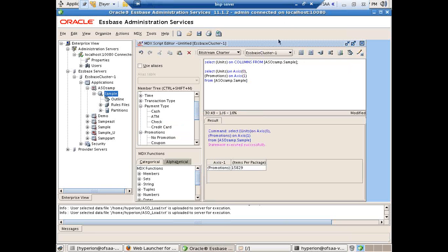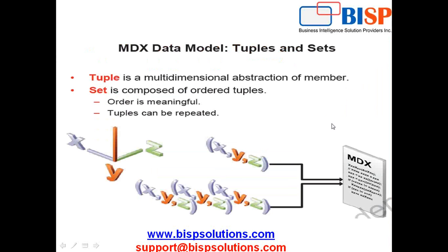Now let's look at two very important concepts in MDX: tuples and sets. A tuple is a multi-dimensional abstraction of members — it is put under parentheses. A set is a collection of tuples composed of ordered tuples. Order is meaningful and tuples can be repeated. In this example, what appears within parentheses is a tuple, and the collection of those tuples is the set.